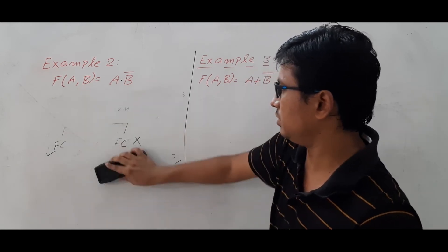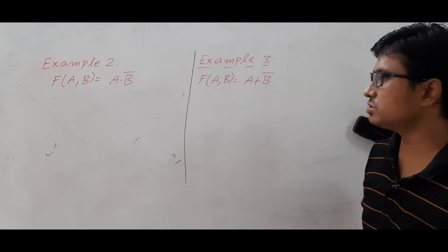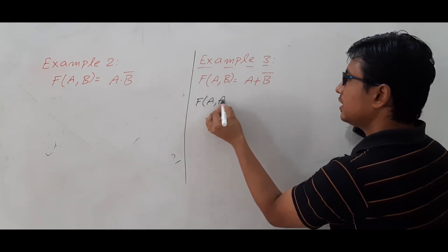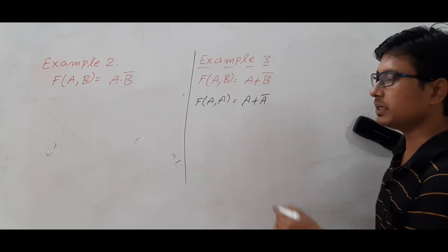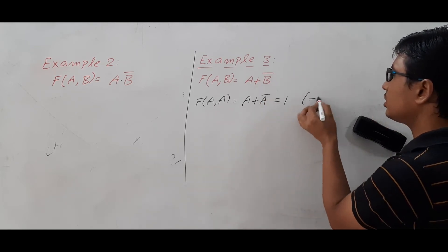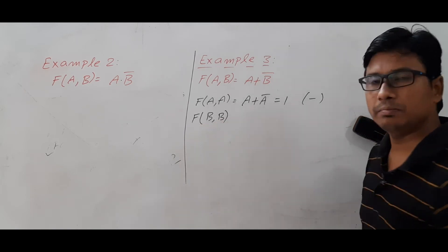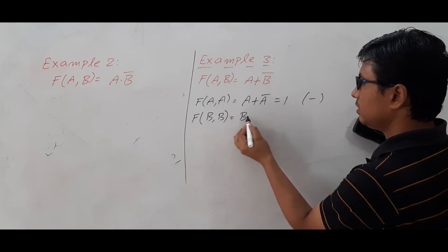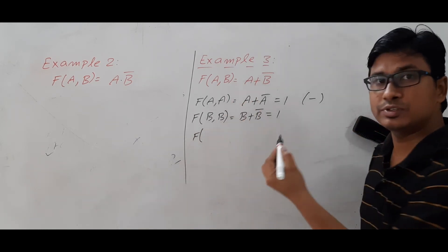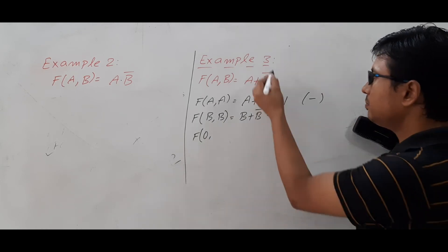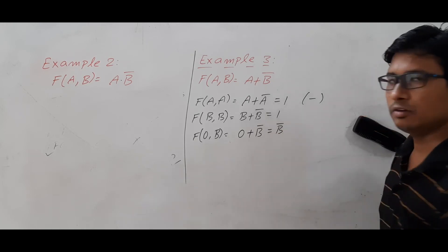Example 2 is partially functionally complete. Now let's move to Example 3. The function is f(a, b) = a OR b-complement. Can I find NOT from this? I try f(a, a): substituting a for b gives a OR a-complement, which equals 1 — I cannot produce NOT. Similarly, f(b, b) gives b OR b-complement, which also equals 1.